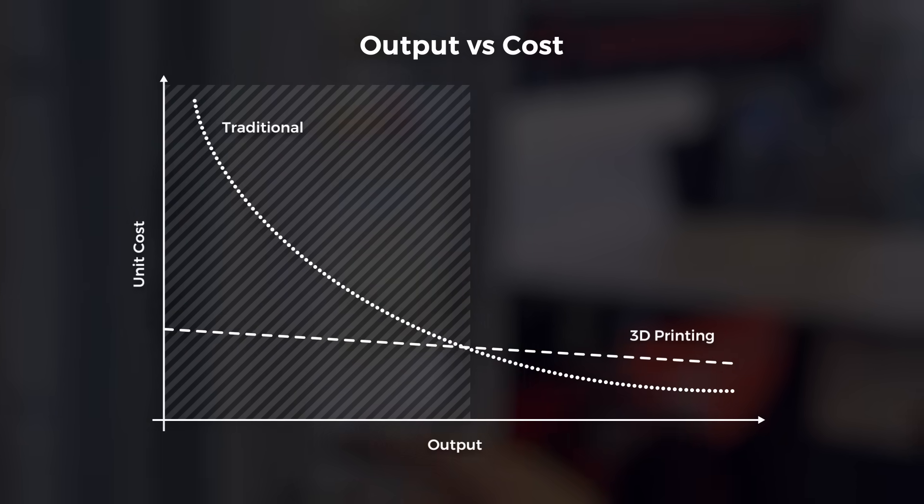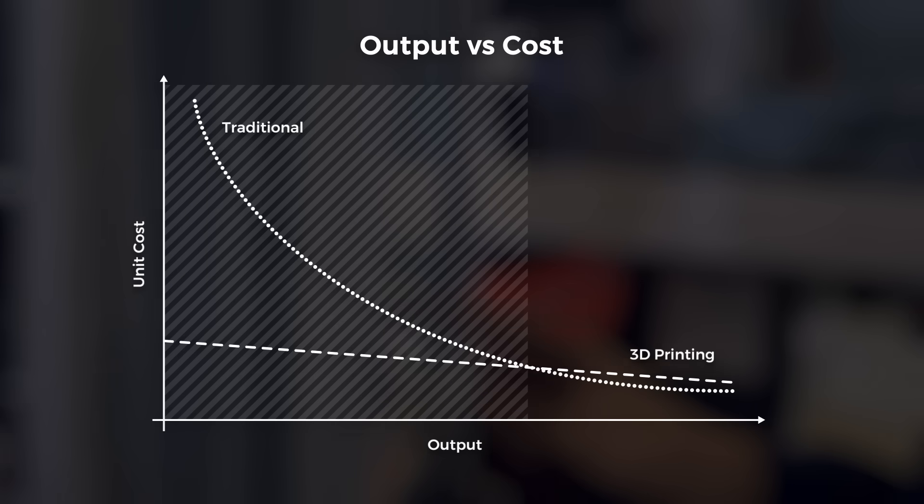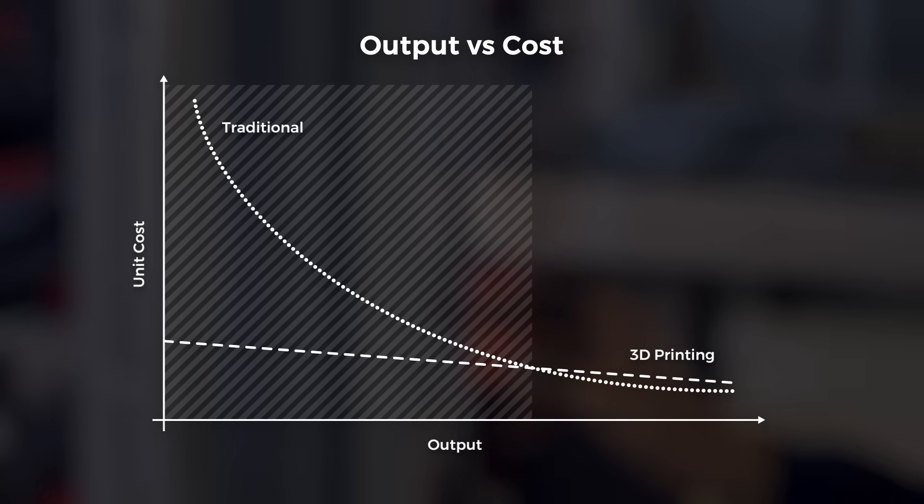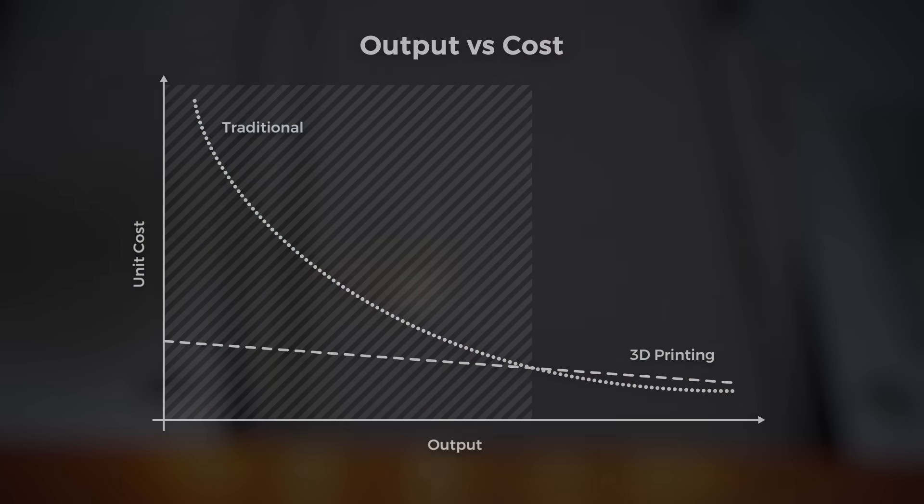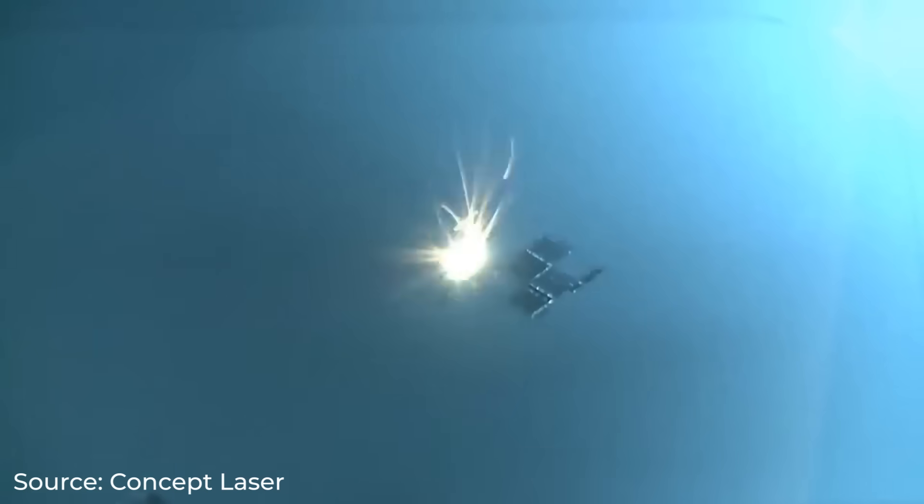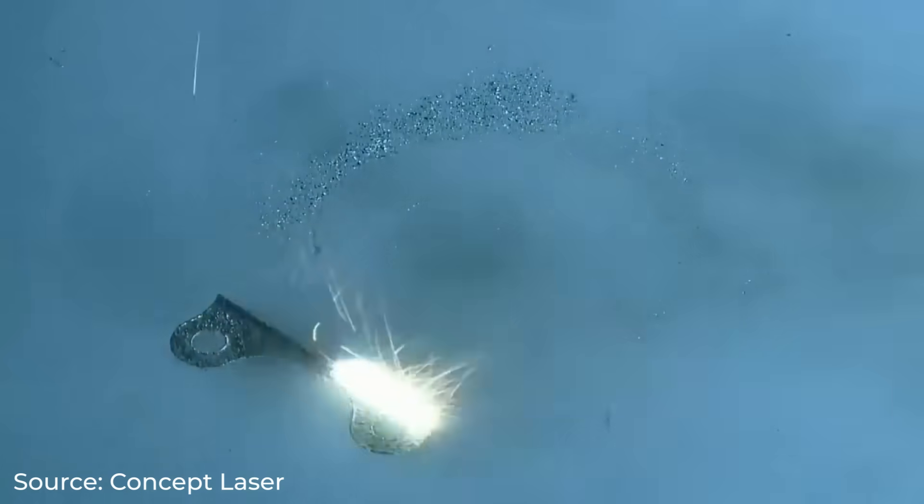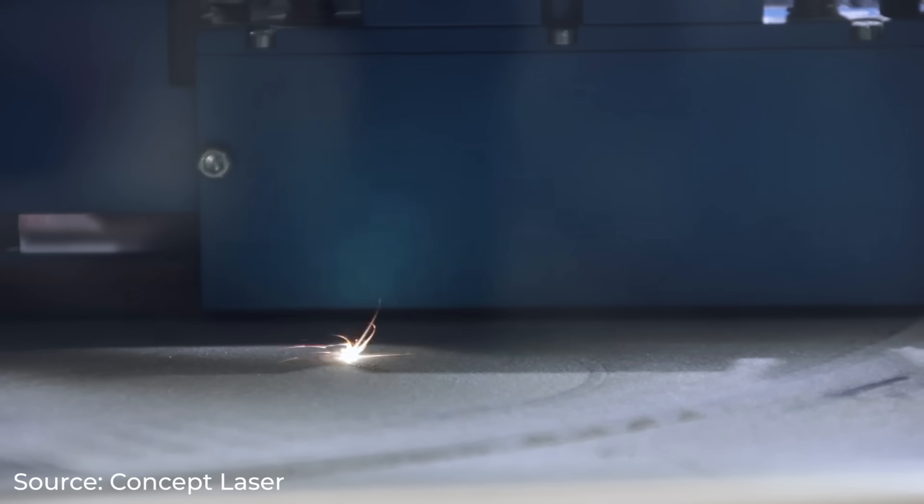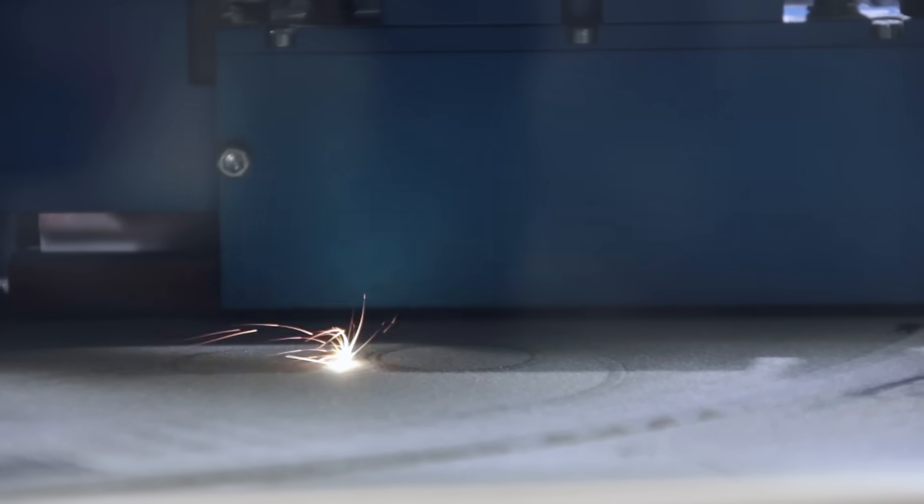If we can reduce the raw material cost with better supply and decrease 3D printer machine costs, we can lower this line and open up more parts to being replaced by 3D printing. That is gradually happening as the cost of these machines lower, in large part due to patents expiring in the last 5 years.